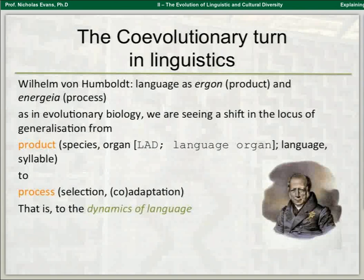Let me say a little bit about what I'm calling the co-evolutionary turn in linguistics. We can go back to the great Wilhelm von Humboldt, who pointed out that you can see language both as a product and as a process. Just as in evolutionary biology, we're seeing a shift in the focus of what we generalise about.